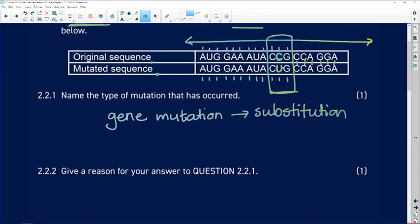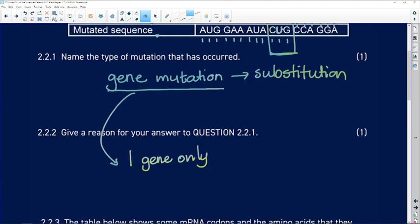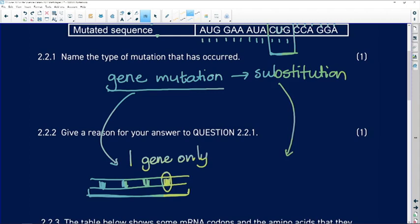Give a reason for your answer. Gene mutations relate to one gene only, not to many genes. If it's affecting many genes, it's going to be a chromosomal mutation. But remember on our stretch of DNA, we've got lots of genes. The whole stretch of DNA is the chromosome. But we're not looking at changes to the whole chromosome. We're looking at changes to one gene only.